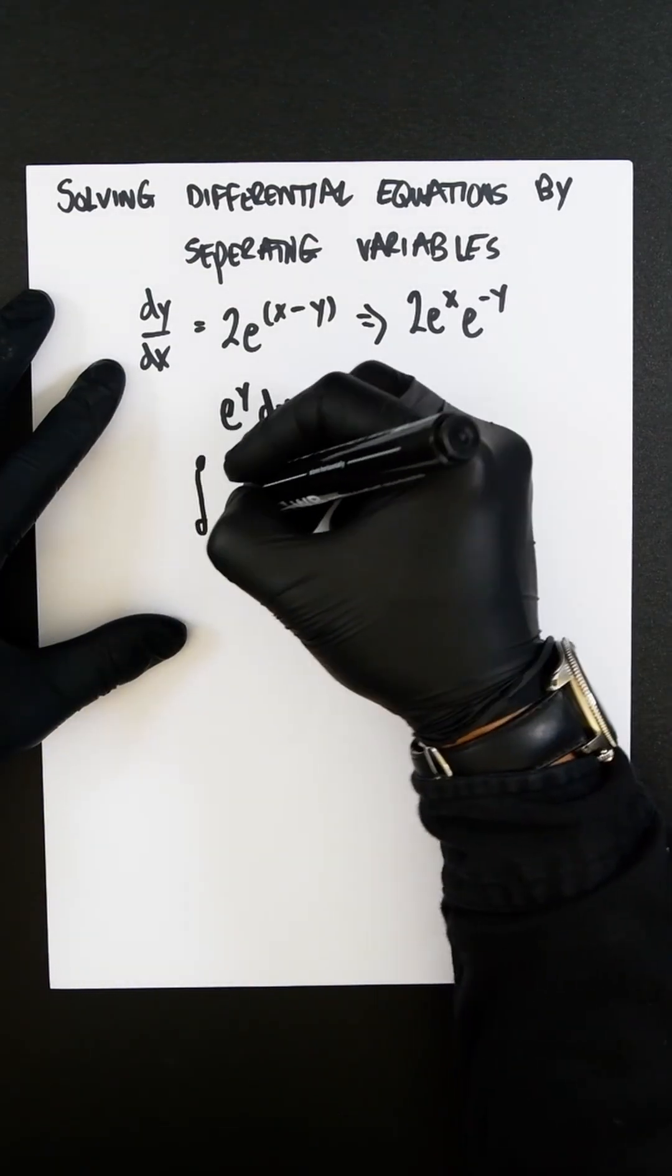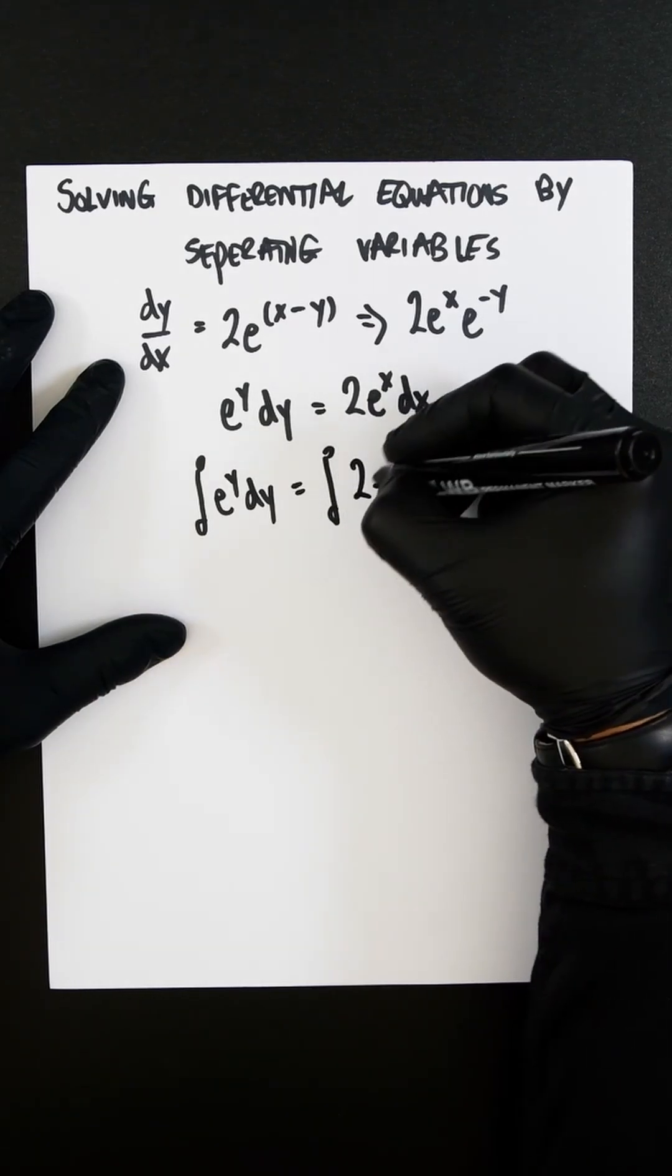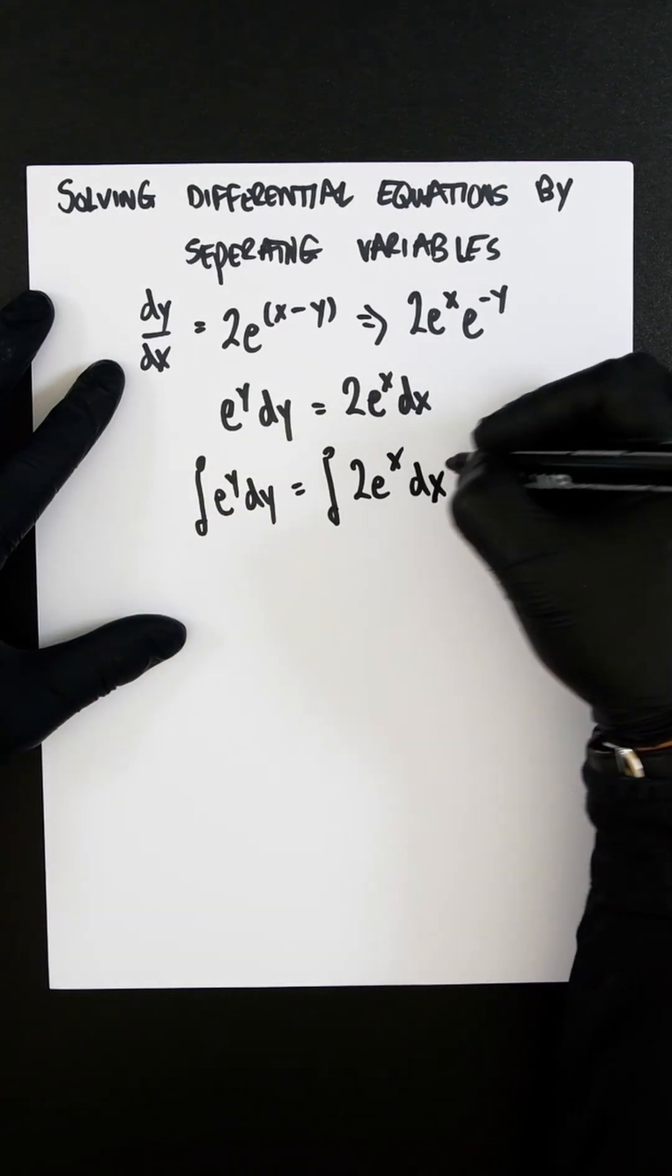We can now integrate e^y dy, and we can integrate 2e^x dx.